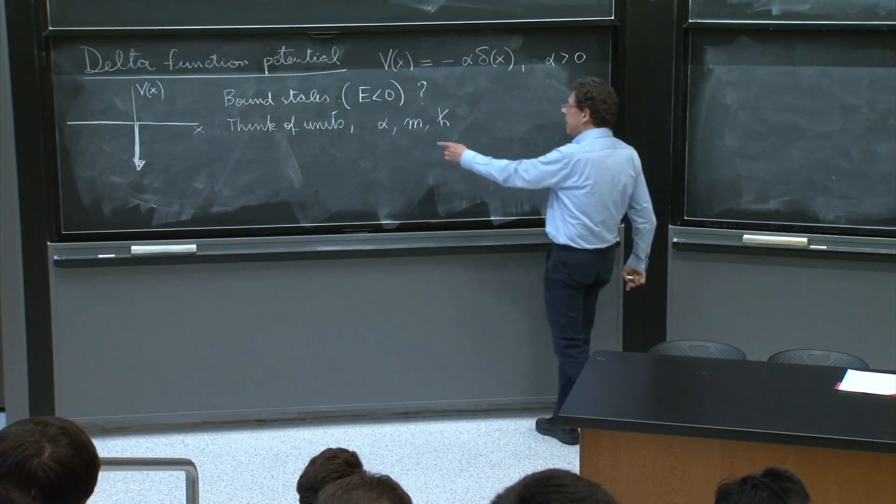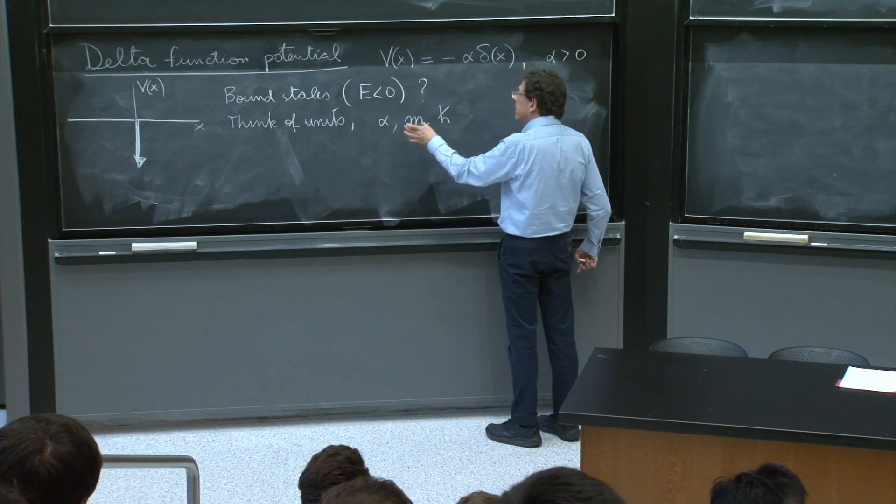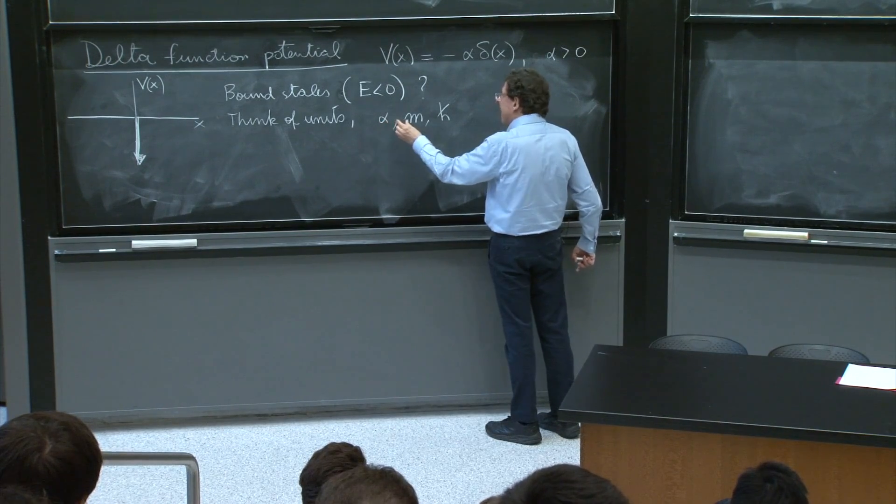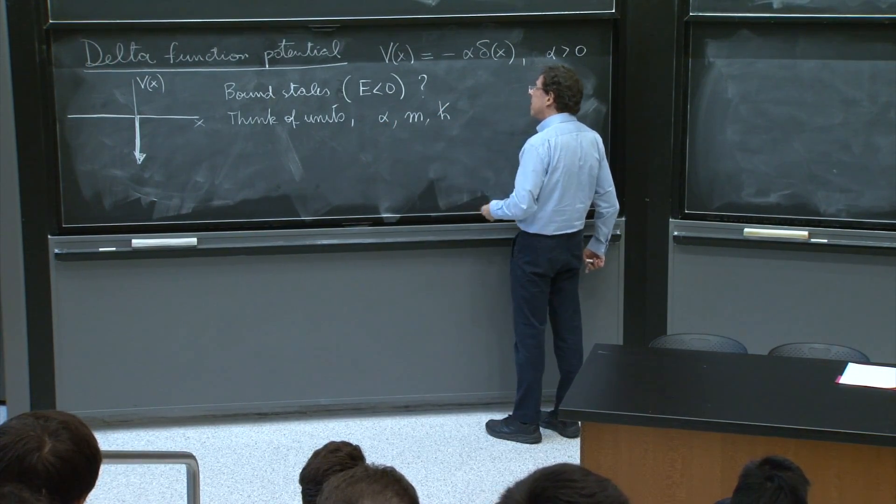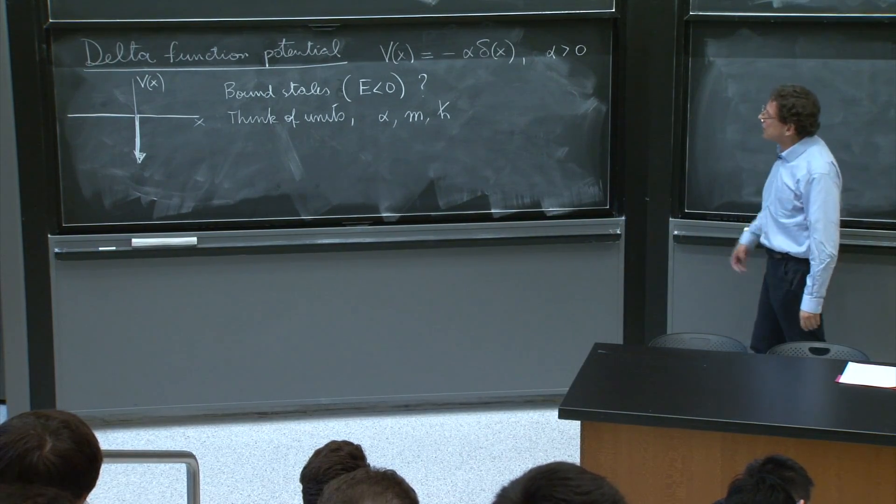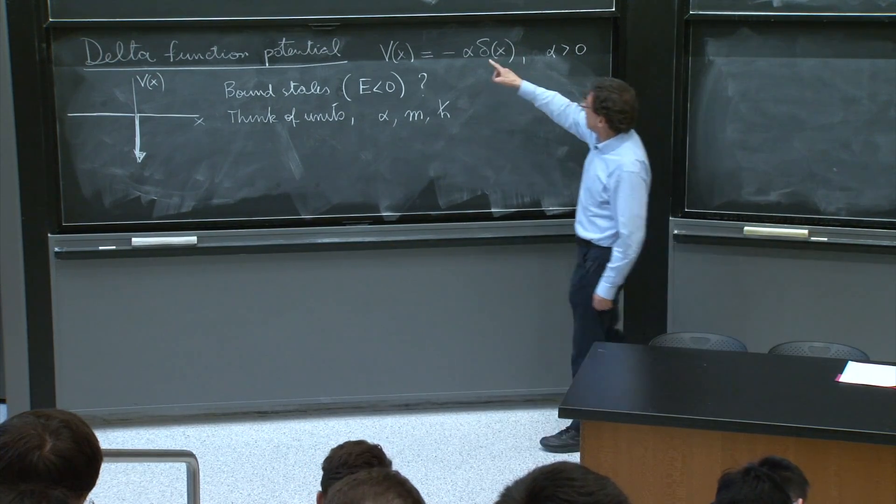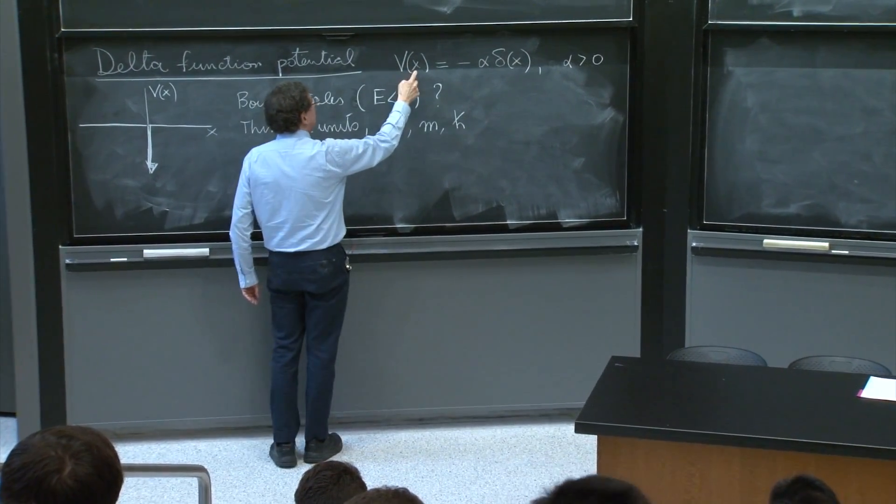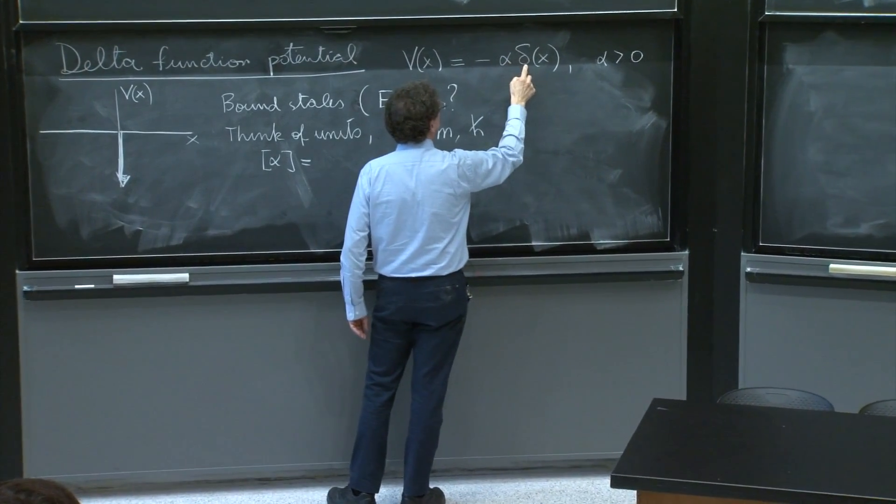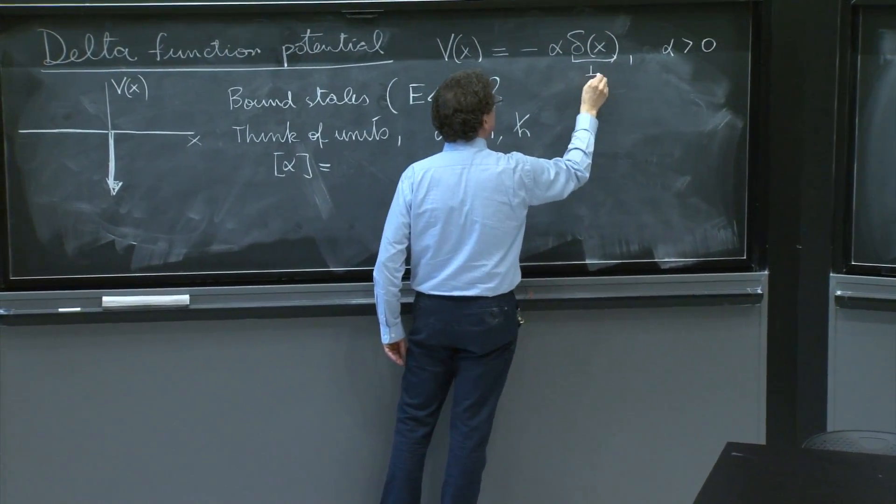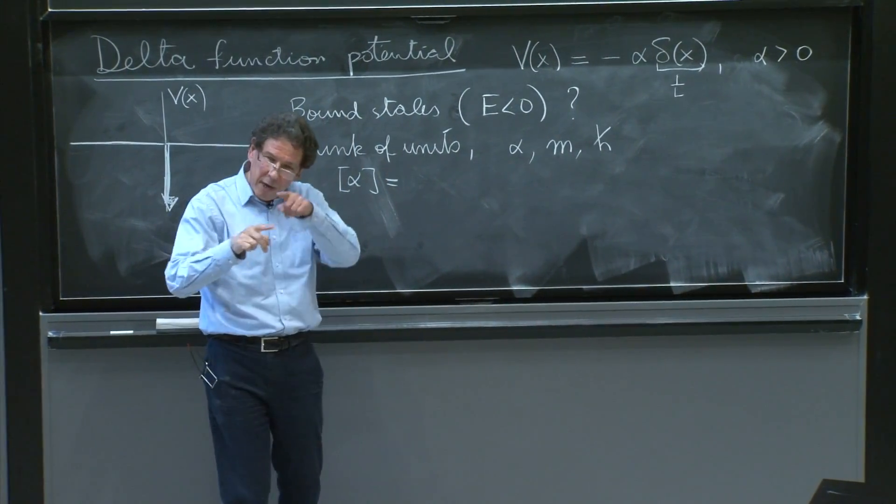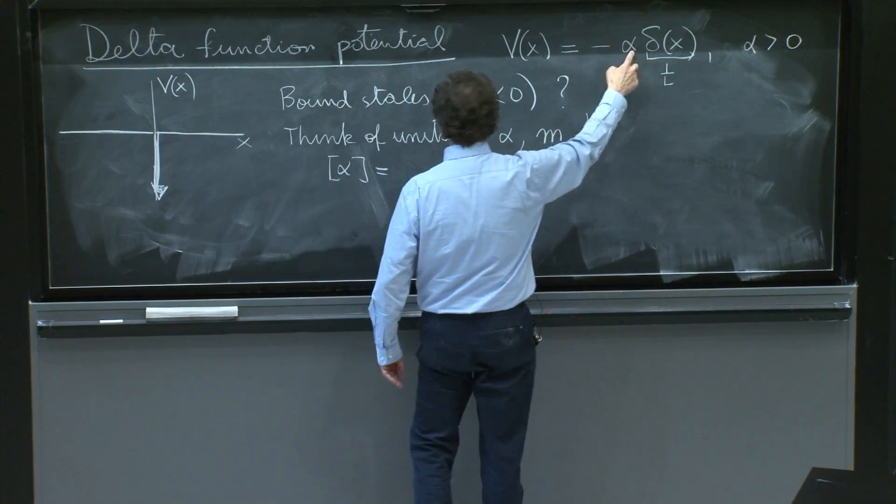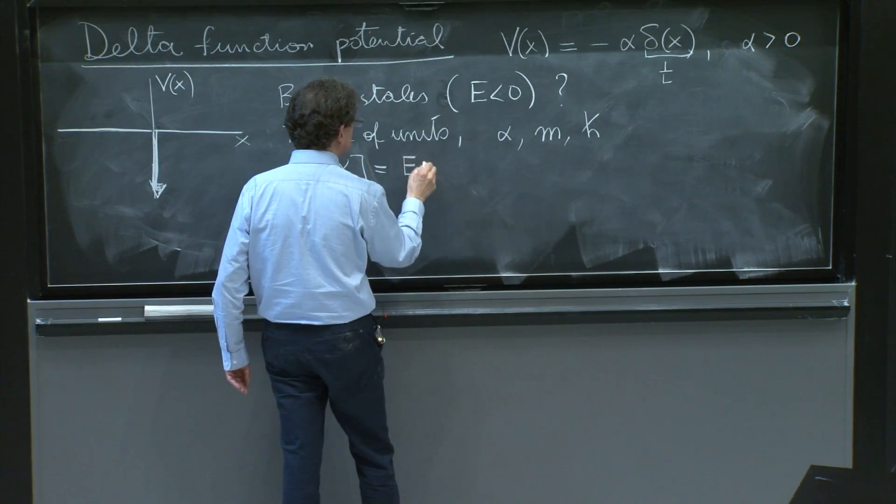That's to be expected. With three constants that are not linearly dependent, whatever that is supposed to mean, you can build anything that has units of length, mass, or time. And from that you can build something that has units of energy. So what are the units of α? The units of α have to give you energy, but the delta function has units of 1 over length. Remember, if you integrate over x, the delta function gives you 1. So this has units of 1 over length. Therefore, α has to have units of energy times length.